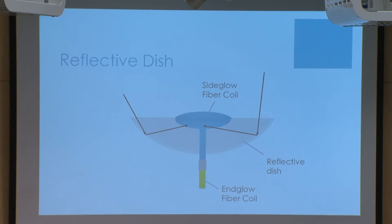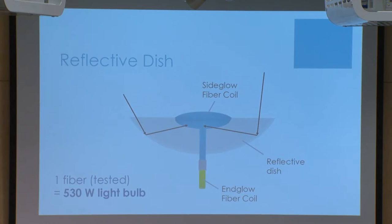Another advantage is that I can use a reflective dish — say, aluminum — and focus the sun's light onto the fiber coil. Assuming about 100,000 lumens of sunlight from a one-meter-square reflective dish, with 90% reflectivity that gives about 90,000 lumens going into the fiber coil. At 9% efficiency, that's about 8,000 lumens through the fiber — equivalent to a 530-watt light bulb, a big improvement from barely one watt before.